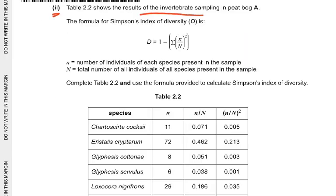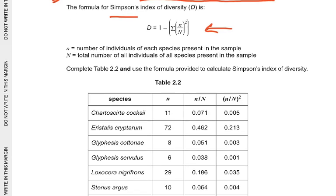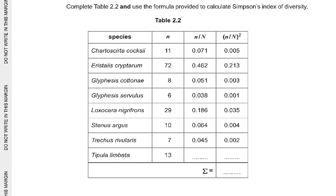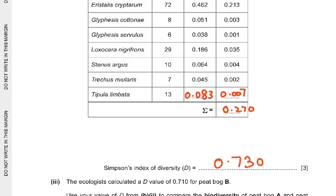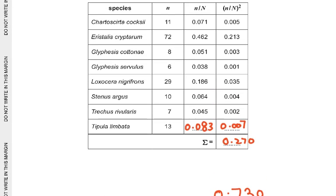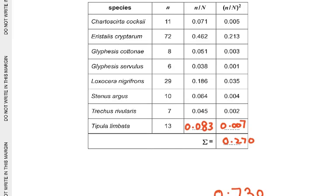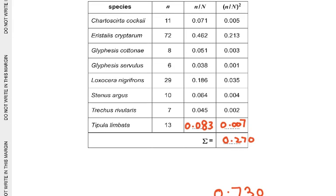Part 2: Table 2.2 shows the results of the invertebrate sampling. The formula is always given to you. N is the number of individuals of each species present in the sample; total N is the total number of all individuals. Complete Table 2.2 and use the formula to calculate the Simpson's Index of Biodiversity — that is, n over N, then square the result.